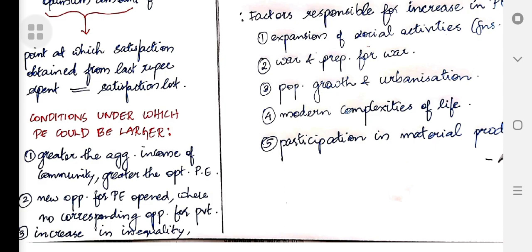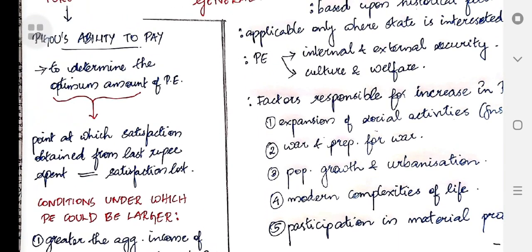The last condition Pigou gives is that when there is greater inequality, the optimum amount of public expenditure is greater. This is because the government has a responsibility to undertake expenditure and activities for decreasing inequality in income. That is about the ability to pay theory of Pigou.